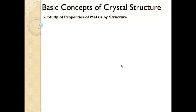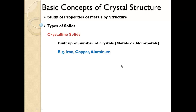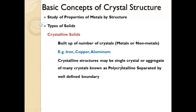Now, the basic concept of crystal structure. To study the properties of metal by structure, we look at types of solids. There are two types: crystalline solid and non-crystalline solid. Crystalline solids are solids built up of a number of crystals, which may be metal or non-metal. Examples are iron, copper, and aluminum. Crystalline structures may be single crystal or an aggregate of many crystals — known as polycrystalline — separated by a well-defined boundary.